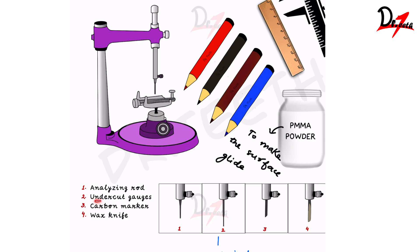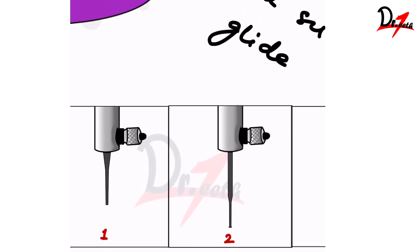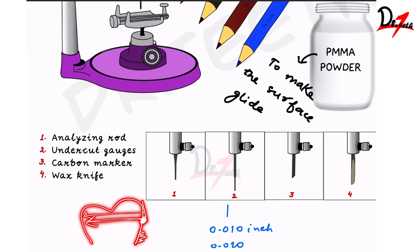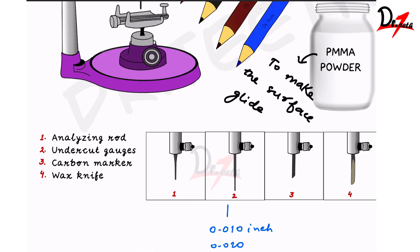The surveyor has several attachments. This is the analyzing rod — it's just a straight rod. Then there are undercut gauges; if you zoom in, you will see that the tip has a particular end shape, which measures the undercut. In case you don't know what an undercut is: if this is a tooth, the area which is below the highest point of contour — the broadest point — will have less width. This area acts as an undercut where you can engage your clasp.